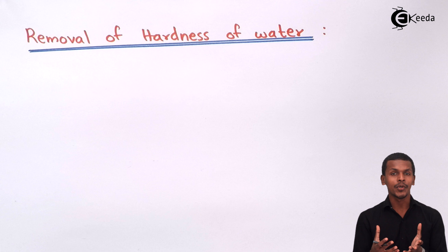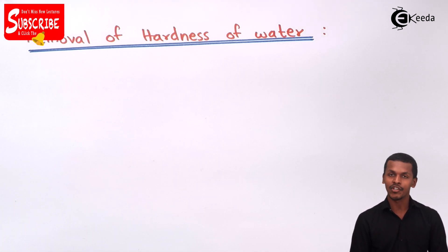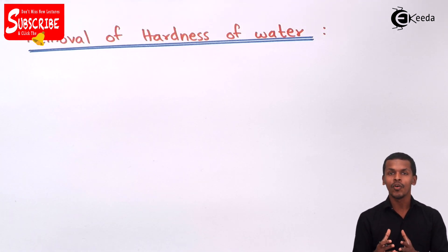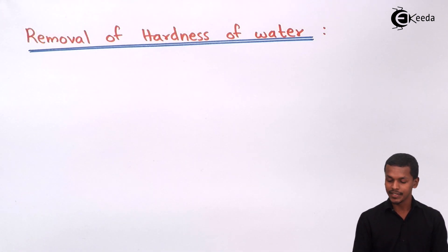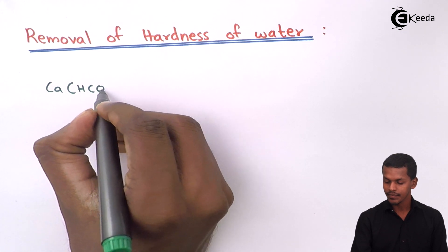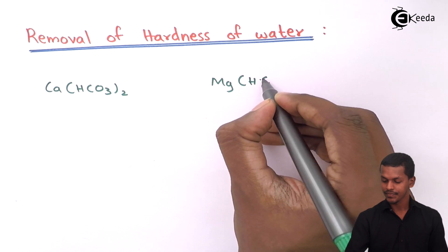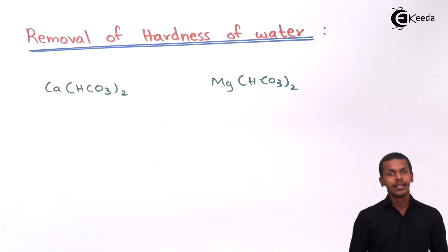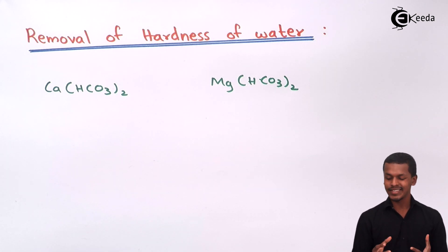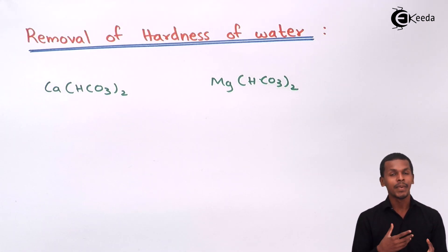As I discussed earlier, a particular water is said to be hard because of the presence of calcium ions along with magnesium ions, but these are present in the form of calcium carbonate along with magnesium carbonate and bicarbonate. Now these substances are easily soluble in water, so whenever this kind of substance is added to water, more calcium ions or more magnesium ions are produced and that makes the water hard.